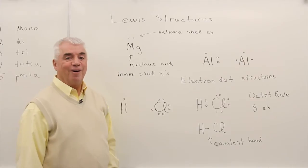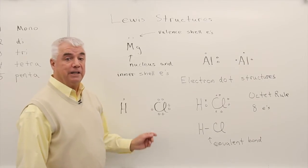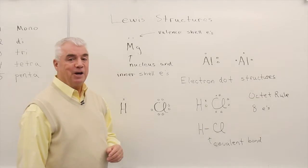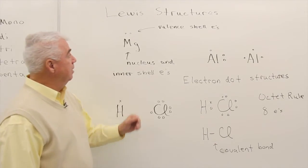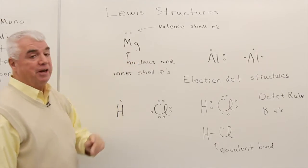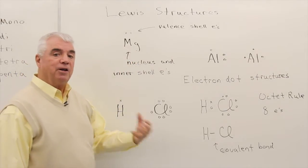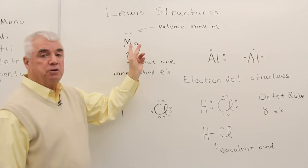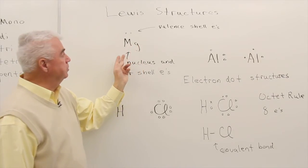Lewis structures are a particularly useful technique to show bonding in covalent compounds. Let's begin with something that isn't covalent though, magnesium. It's a metal, typically found in ionic compounds, but we can use it to illustrate what a Lewis structure is.